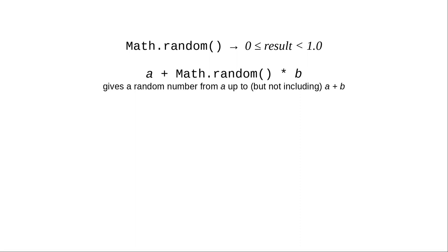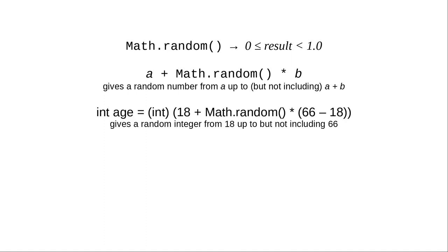Here's the generic formula for creating a random number in a given range. And here's how you might use it in a program to generate a random age between 18 up to but not including 66, which would be 18 through 65.